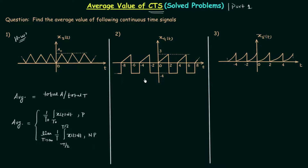I will directly move to signal x4(t). You can see this signal extends from minus infinity to infinity. Now we check if any particular structure is repeated — and yes, this structure is repeated. So we can say that x4(t) is a periodic signal. Whenever you start calculating the average value, first check whether the signal is periodic or non-periodic, because we use two different formulas accordingly. Since the signal is periodic, we will find the area in one fundamental time period. The fundamental time period T0 is equal to 4.